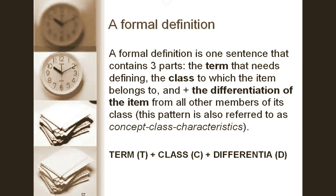What is a formal definition? A formal definition is one sentence that contains three parts: the term that needs defining — we can also call this the concept; the class to which the item belongs, meaning how we classify it; and the differentiation of the item from all other members of its class. By differentiation, we mean how is this particular thing different from other types? If it's a theory, how is this theory different from other theories? We also call this concept, class, characteristics — what makes it different from other things.